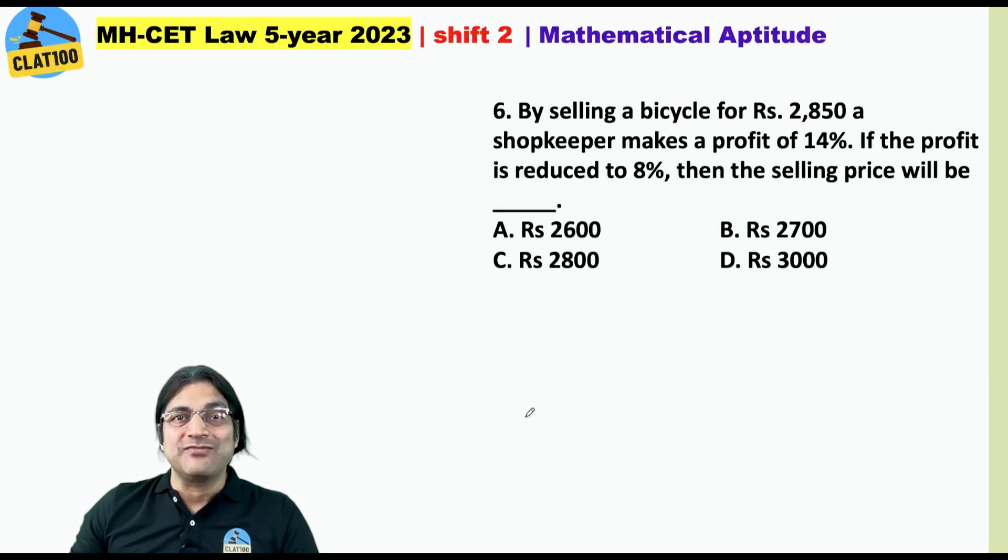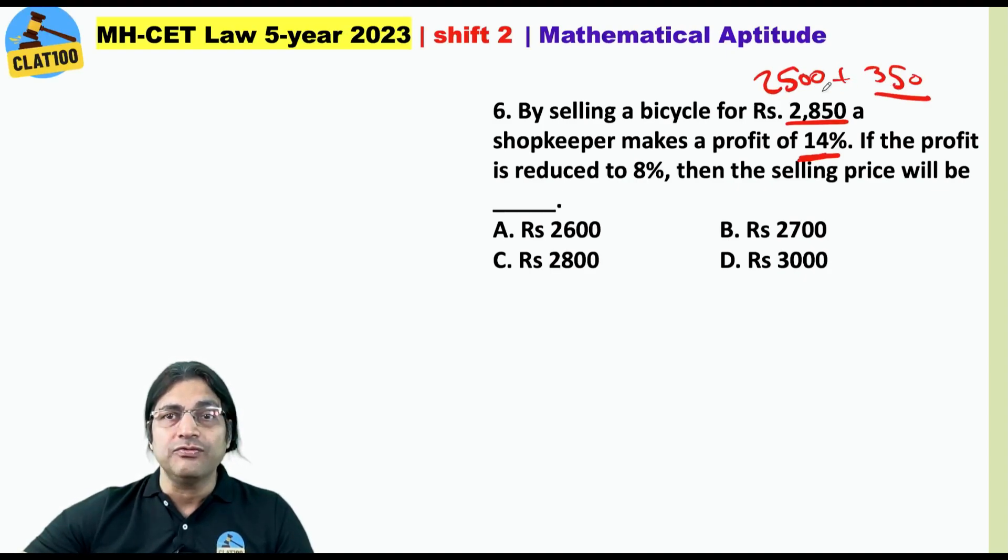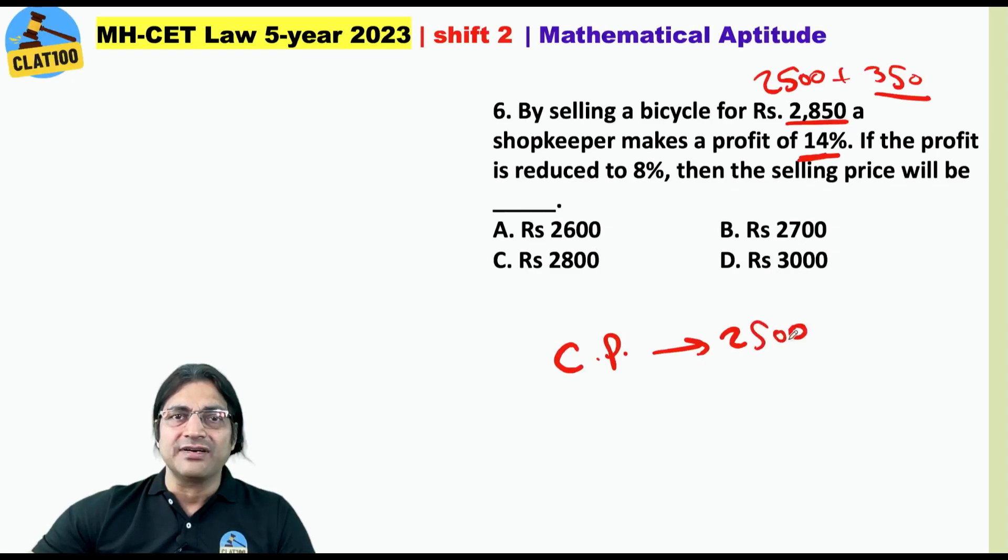By selling a bicycle at 2850, a shopkeeper makes a profit of 14%. Here I have a tip for you. This is 14%, a multiple of 7. Look at 2850 - can I divide it as 2500 plus 350? Isn't it obvious that 350 is also a multiple of 7? So is 14% of 2500 equal to 350? Yes. So if you observe this, you realize the cost price must have been 2500. For 8% profit, 8% of 2500 would be 200. The selling price would be 2500 plus 200, which is 2700.